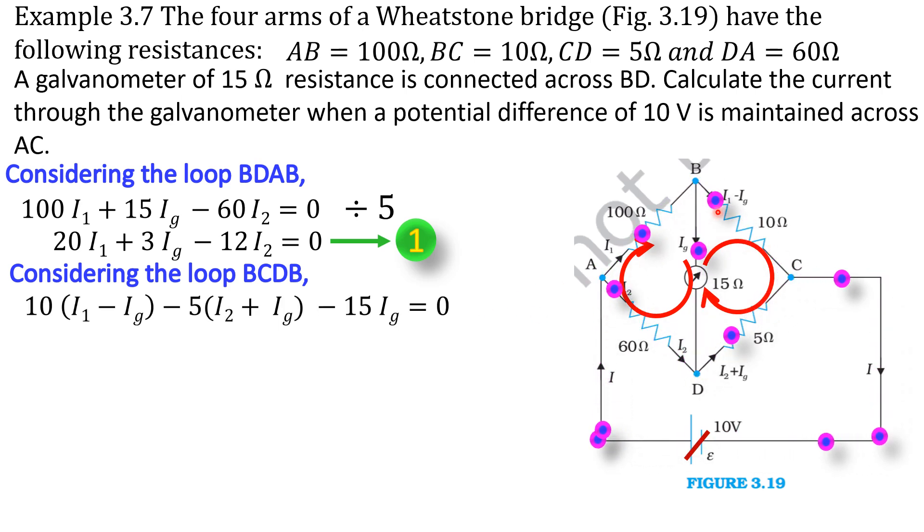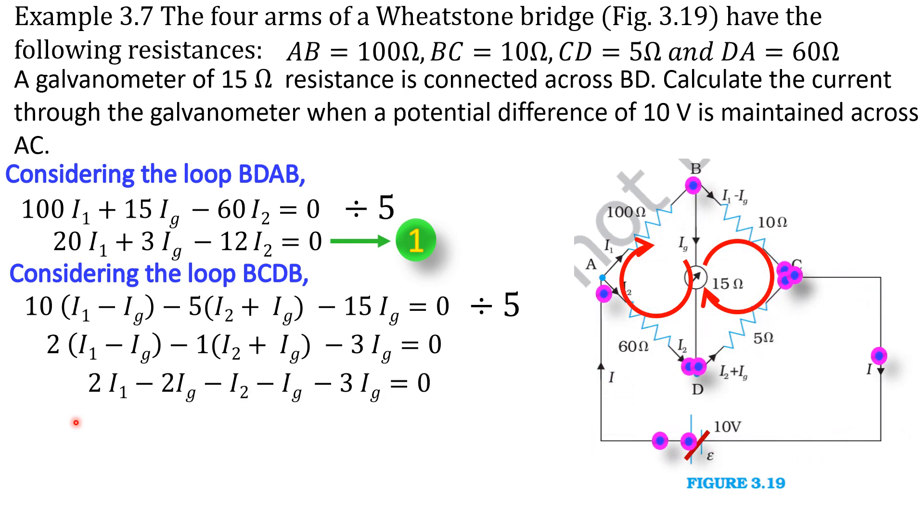So the equation begins: 10I1 minus IG minus 5 into I2 plus IG minus 15 into IG. Again, dividing this equation by 5, we get this one. Expanding this equation, we get 2I1 minus 2IG minus I2 minus IG minus 3IG is equal to 0. Adding this IG values, that is minus 2IG minus IG minus 3IG gives minus 6IG. So the equation becomes 2I1 minus 6IG minus I2 is equal to 0. Let us consider this is equation 2.